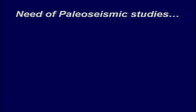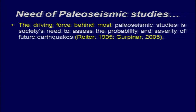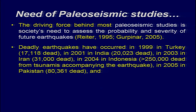The driving force behind most paleoseismic or ancient earthquake studies is society's need to assess the probability and severity of future earthquakes. Deadly earthquakes have occurred — in 1999 in Turkey killing almost 17,000 people, in 2001 in India killing about 20,000 people, in 2003 in Iran killing 31,000, and in 2004 in Indonesia — the Sumatra-Andaman earthquake — which took the lives of more than 2.5 lakh people from both tsunami and earthquake.